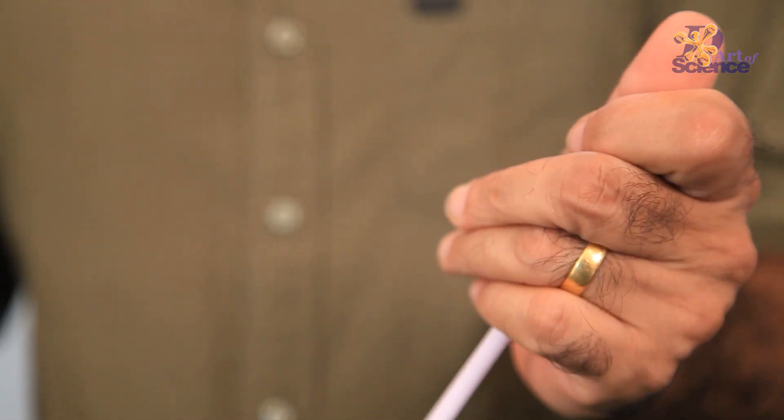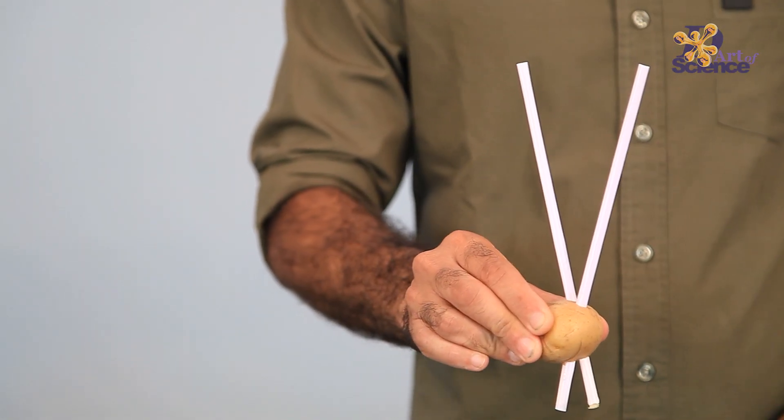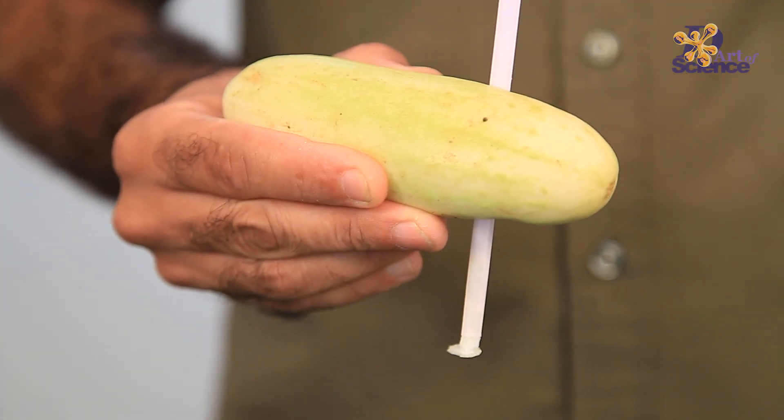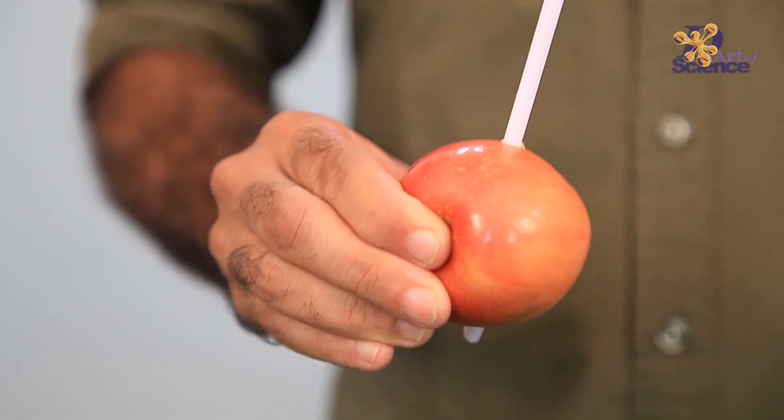But when we fold or cover the top of the straw, now the air cannot leave the straw, so the air simply compresses and then it makes the straw strong enough to go right through the potato. I have linked the video up here and in the description box as well. Let us know what fruits and vegetables you experiment with, and we'll see you next week.